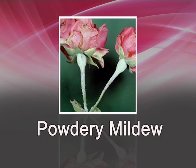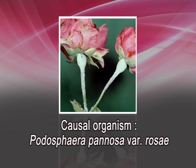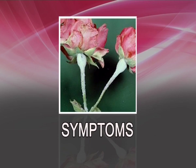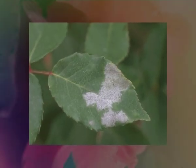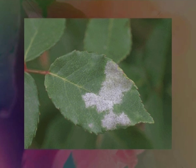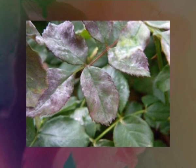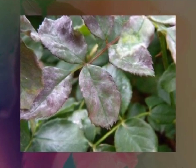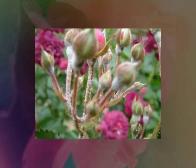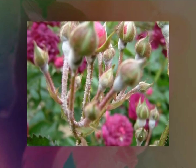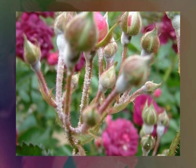Now let's discuss one by one some of the important diseases of rose. The first one is powdery mildew. The causal organism is Podosphaera pannosa variety rosae. The symptoms: at first, raised blister-like areas occur on the leaves and soon become covered with a white to grey powdery growth on leaves, shoots, sepals, buds, and occasionally on petals.